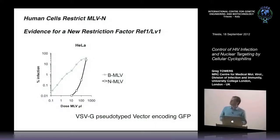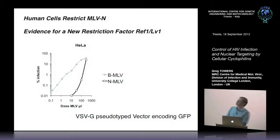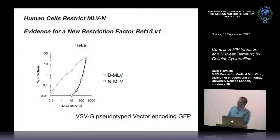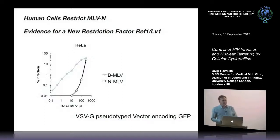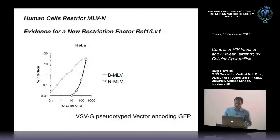When I was a postdoc working with Olivier Danos at Genathon, I did an experiment that was the really interesting one for me. I'm showing here a titration curve of two gamma retroviruses - two MLVs that are very closely related, differing in essentially two or three amino acids, mappable to a single amino acid in the capsid. This particular MLV, NMLV, was very much less infectious in human cells than its closely related virus BMLV. On cat, dog, and bird cells, the titers were very similar, but on all human lines tested, NMLV was very low titer - and some monkeys also showed this.